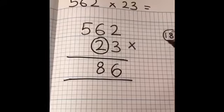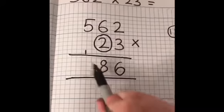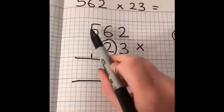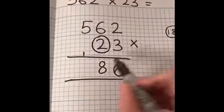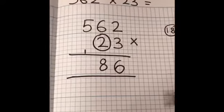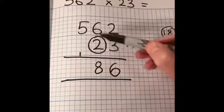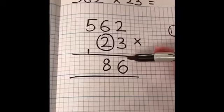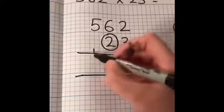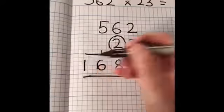And then our 1 we're going to carry into the hundreds column. Now, if you decide to carry it at the bottom or the top, it doesn't matter as long as you know it's there, because sometimes it can get a bit fiddly. Then we're going to work our way across, so now we'll do 3 times 5, which is 15. But remember, I've still got this 1, so I need to add that on. So 15 add my 1 is 16. So far we've got 1686.